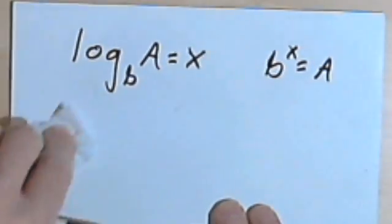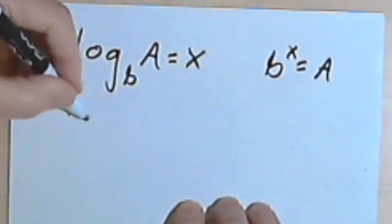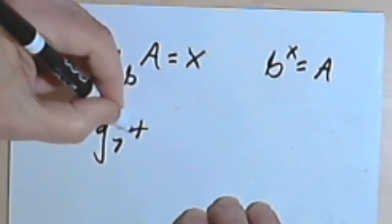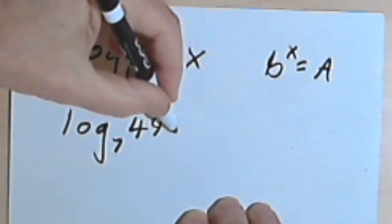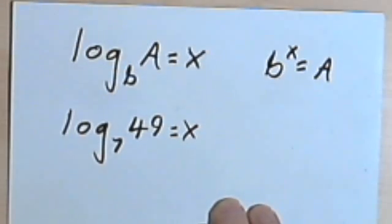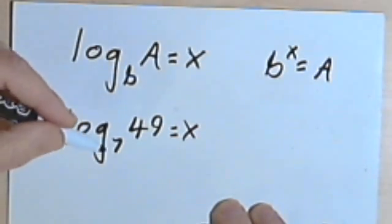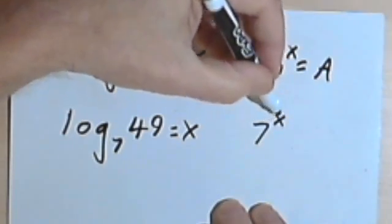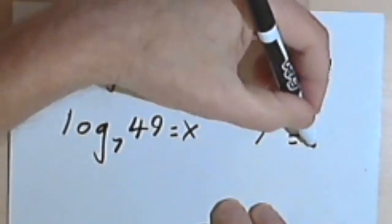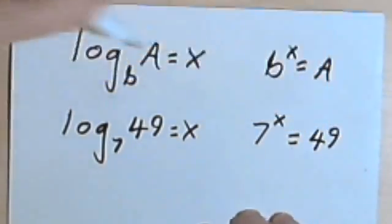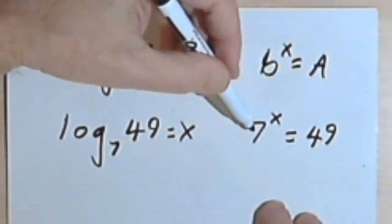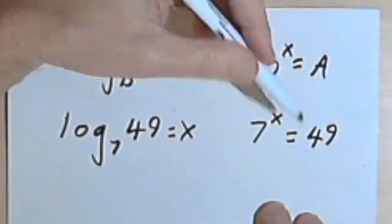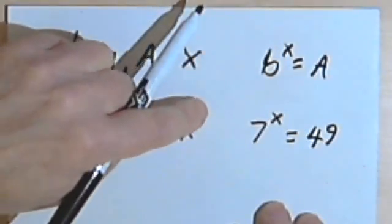Let's try another one. Let's say I have the log base 7 of 49. So I'm going to write log base 7 of 49 equals x. And now I'll convert that. I'll take this base 7, raise it to the x power, and that equals 49. So 7 squared is 49. So that means x must equal 2.